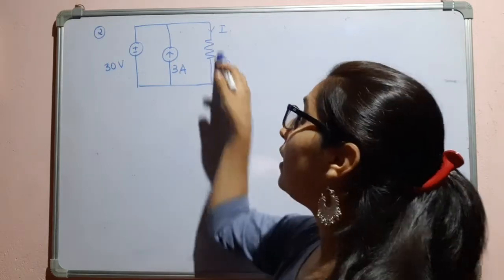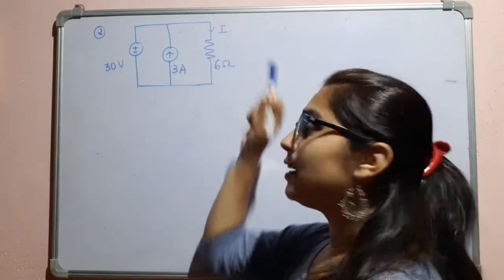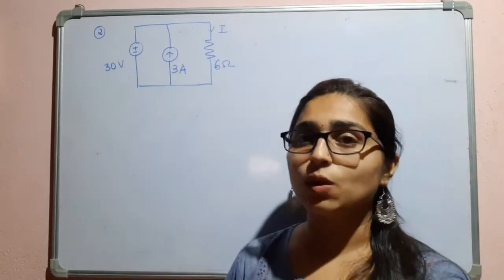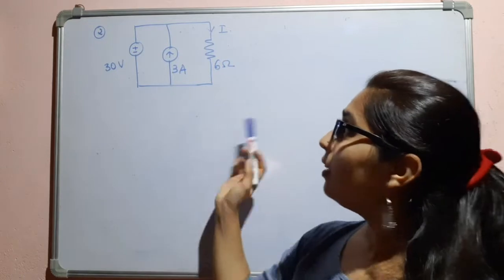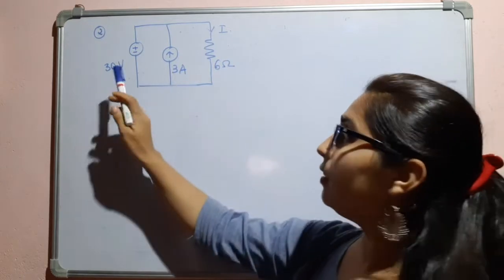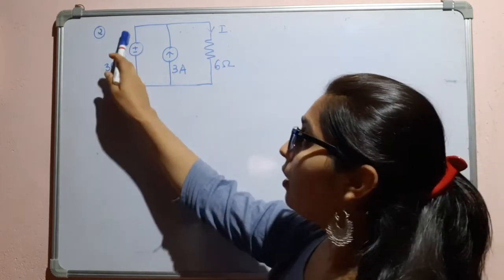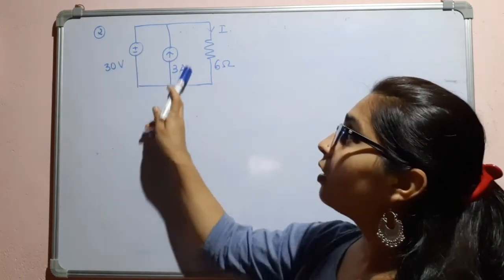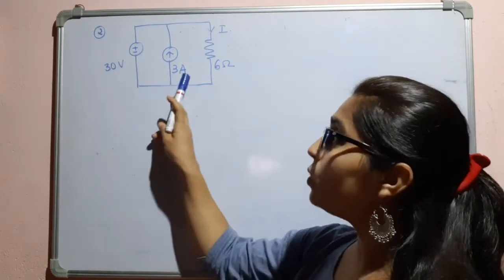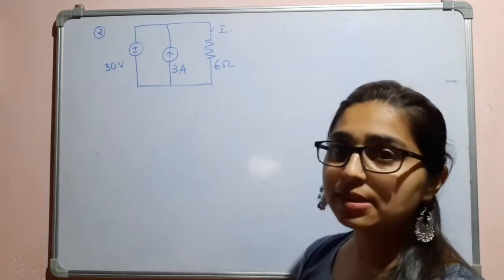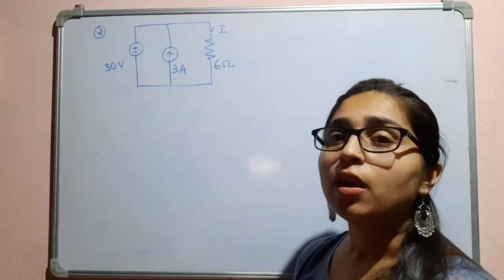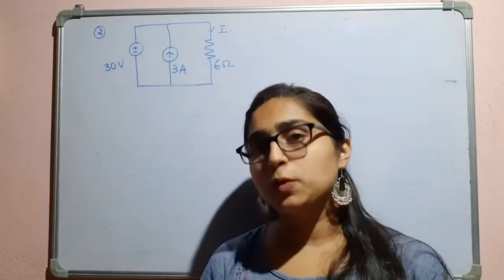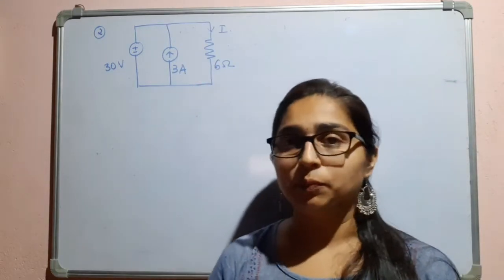In this question we have to find the current I that is flowing through the resistor 6 ohm. The circuit has a voltage source, a current source, and a resistor. We will apply the superposition theorem to solve this.